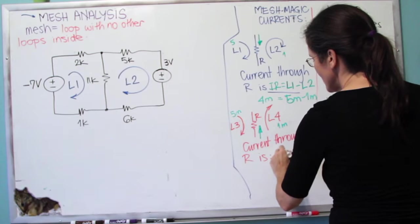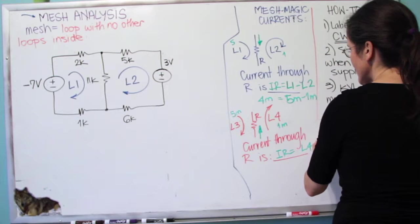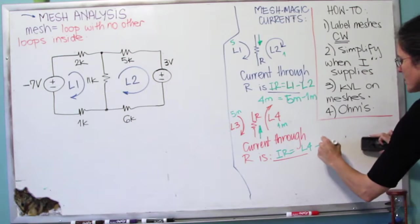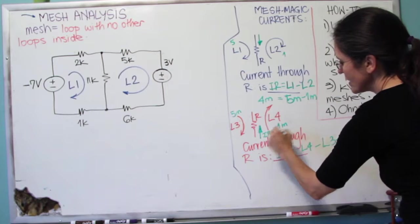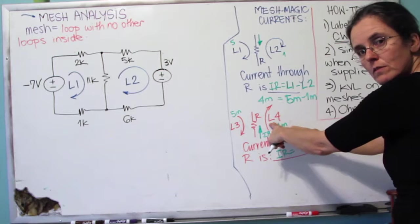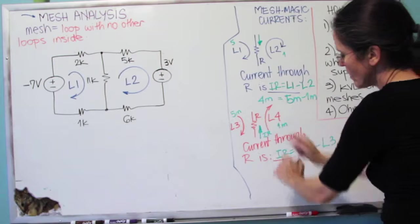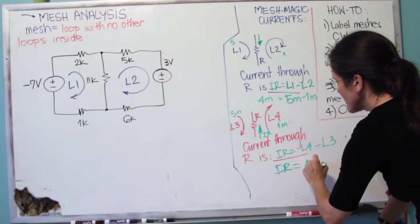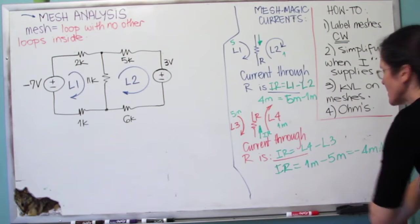The current through the resistor in this case would be L4 minus L3. The reason being my current on the red resistor is going up. So I'm getting this current here, this loop current or mesh current, and subtracting by the mesh current that's going in the opposite direction. So IR will be 1 milli minus 5 milli, which is minus 4 milliamps.